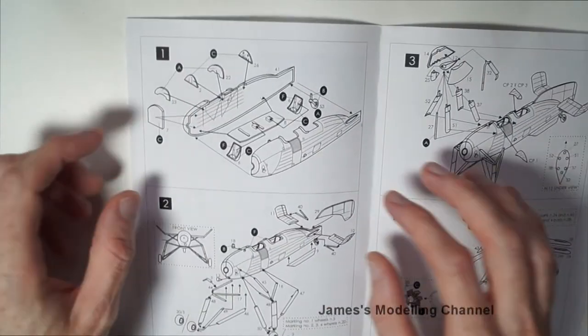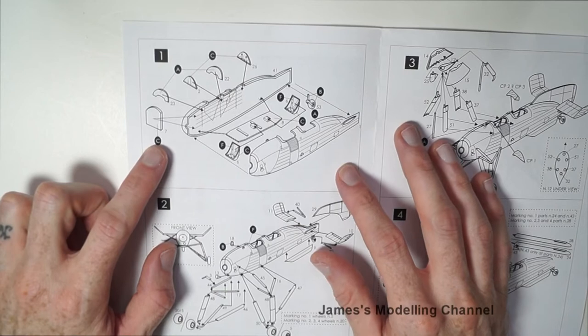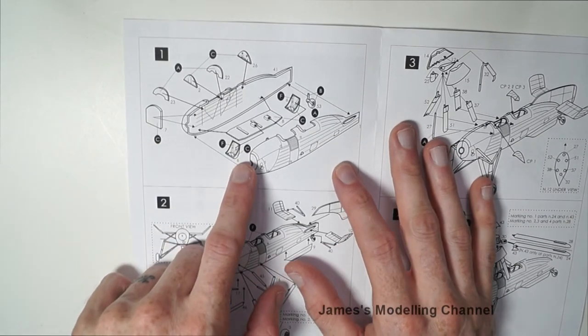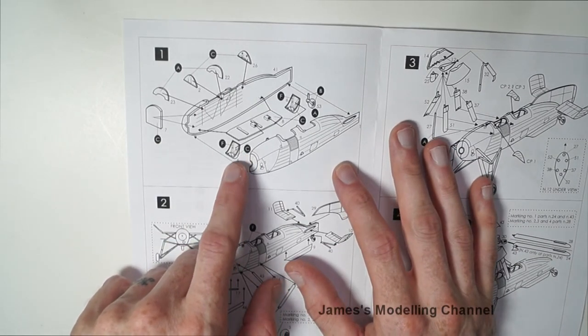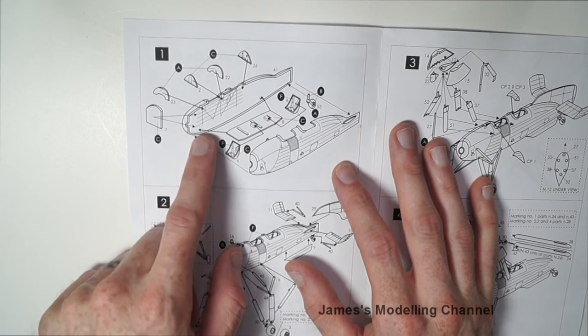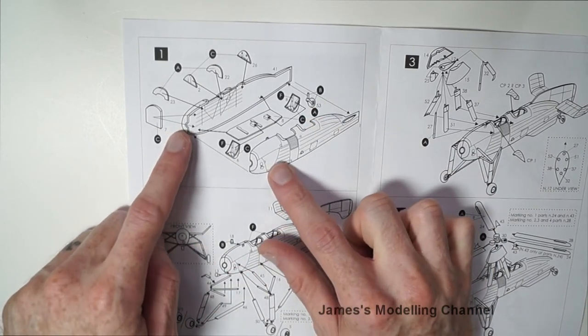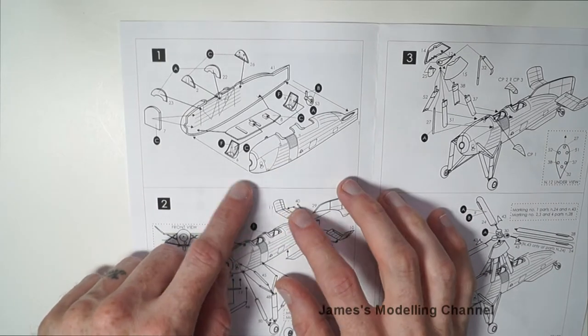And over the page. Step one is adding the cockpit floor, seats, instrument panels, the front bulkhead and tail wheel, then immediately sealing the two halves together.